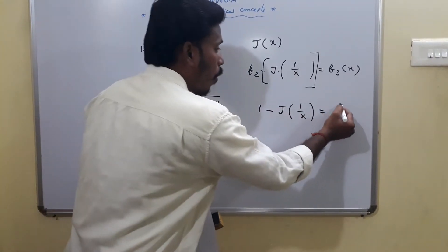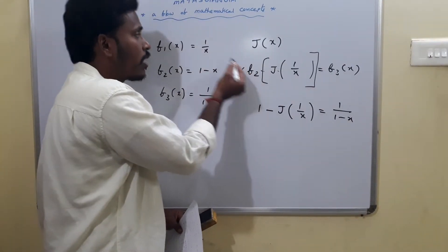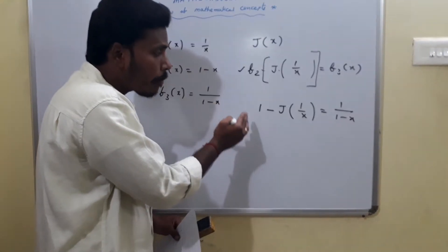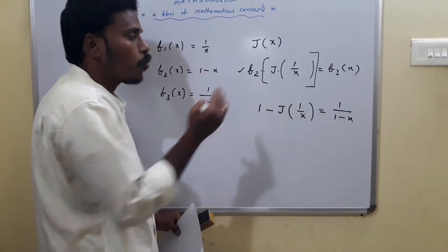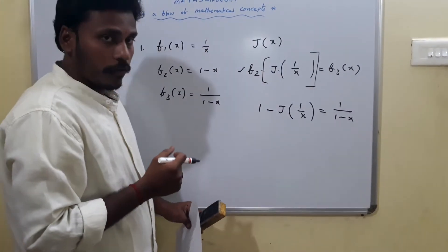Which is given as 1 by 1 minus x. So by the given condition, by utilizing the given three functions, I have now 1 minus J of 1 by x equals 1 by 1 minus x. From there, I need to get the value of J of x.